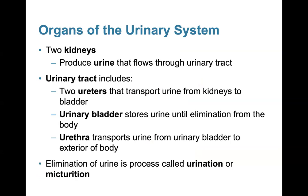The organs of the urinary system include two kidneys, which produce urine that flows throughout the urinary tract. The urinary tract includes the two ureters that transport urine from the kidneys to the bladder, the bladder which stores urine until elimination, and the urethra which transports urine from the urinary bladder to the exterior. Elimination of urine is a process called urination or micturition.